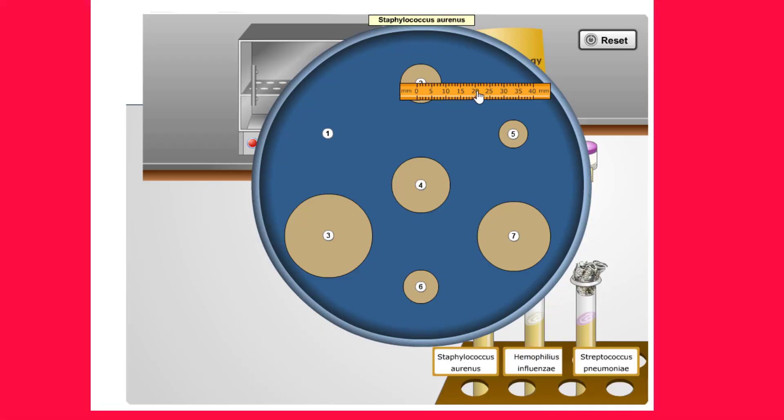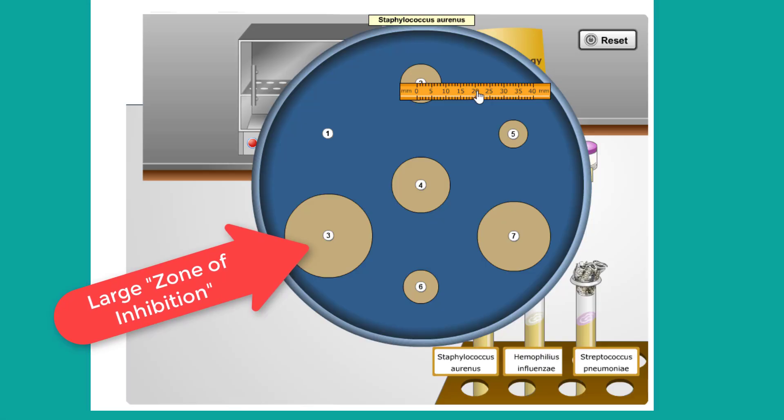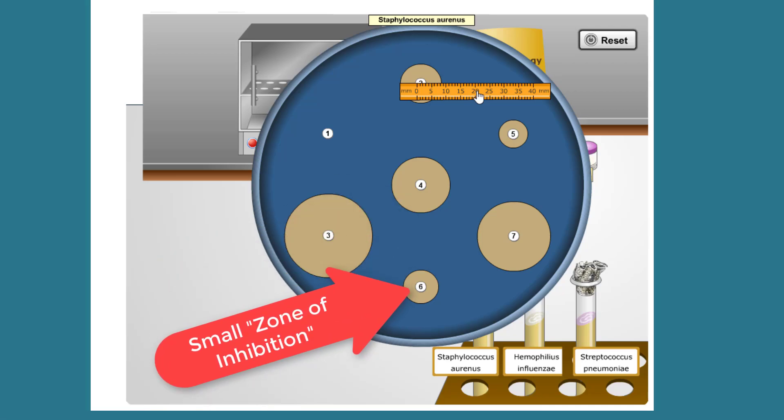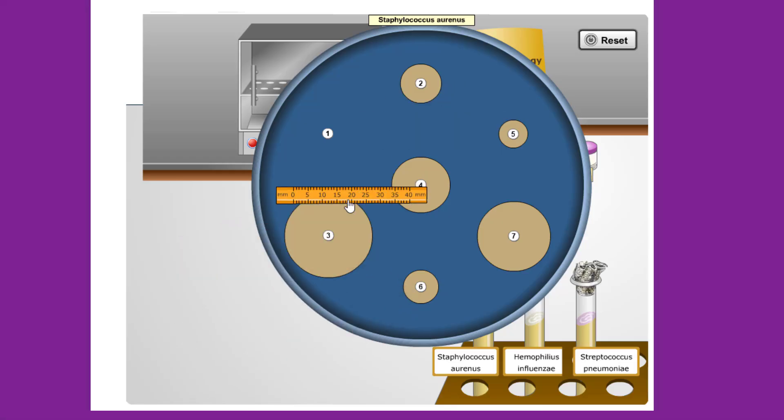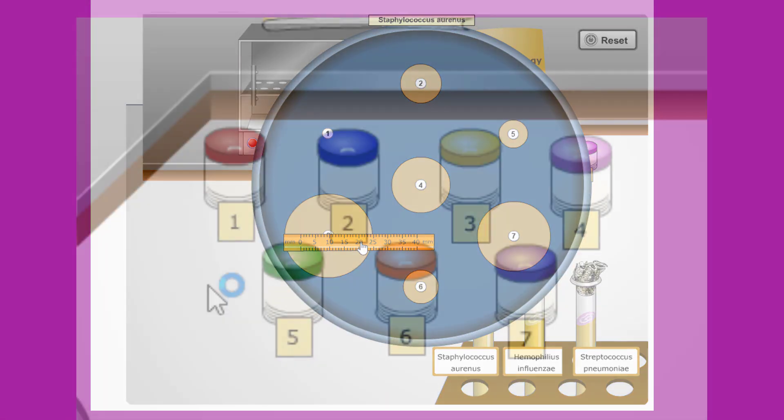We will use our ruler to measure the diameter of the zones of inhibition around each disc. These are seen as the tan areas. Some discs may be surrounded by a large zone of inhibition where no bacteria grew due to strong inhibitory effect of the antibiotic, antiseptic, or disinfectant on the disc. Other discs may have caused little or no inhibition. This means that the bacteria are partially or completely resistant to the antimicrobial agent that is put upon them.